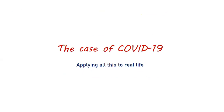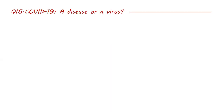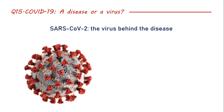Now that I've given a broad overview of what viruses and viral diseases are, I'd like to focus on COVID-19 itself — applying all this to the real-life scenario we are all living through. First of all: COVID-19, is it a disease or a virus? A lot of people get this wrong. COVID-19 is a disease, and the virus behind the disease is called SARS-CoV-2, or SARS-Coronavirus-2.